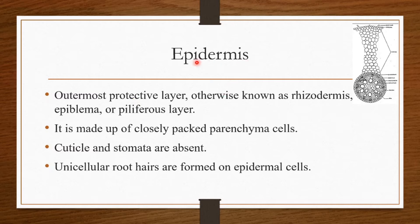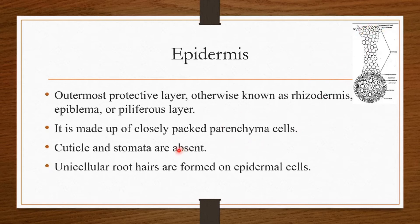Let's discuss in detail. The first part is the epidermis. As you all know, it is the outermost protective layer in root. The epidermis is otherwise called rhizodermis, epiblemma, or piliferous layer. It is made up of closely packed parenchyma cells. The cuticle and stomata are absent, and unicellular root hairs are formed from the epidermal cells.